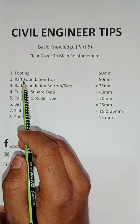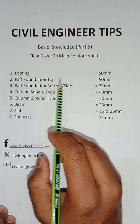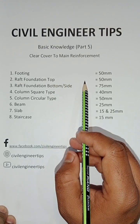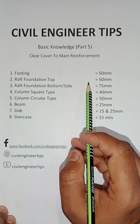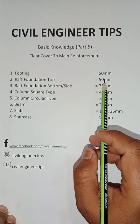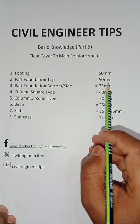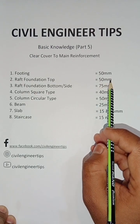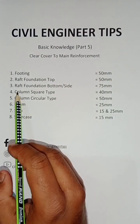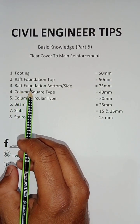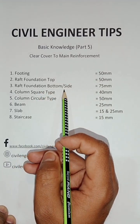For raft type foundation, the clear cover provided on the top is 50 mm. Number three is raft foundation bottom side.